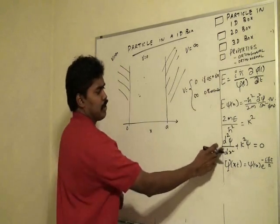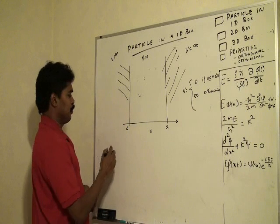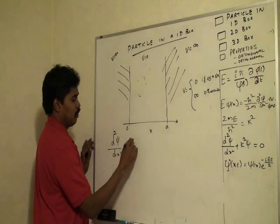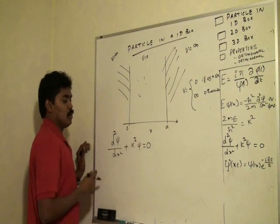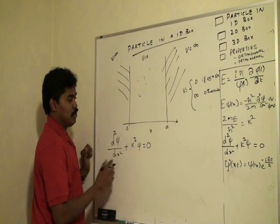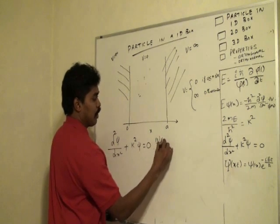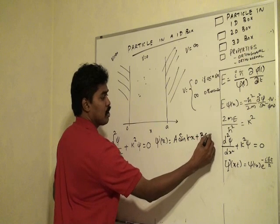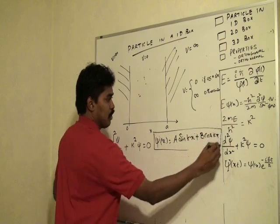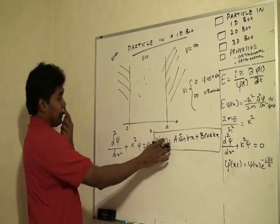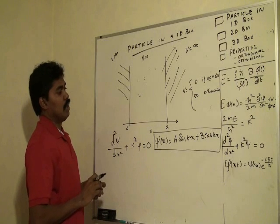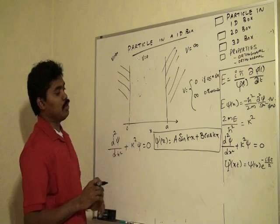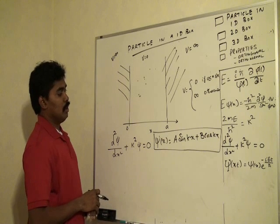So let us go back to the condition I derived in the previous equation: d²ψ/dx² plus k²ψ equals 0. We have to take a ψ function which satisfies this condition. The ψ function ψ(x) = A sin(kx) + B cos(kx). This is a wave function which satisfies this condition, and we will use it to find the wave function of the particle in one dimension by applying the boundary conditions.